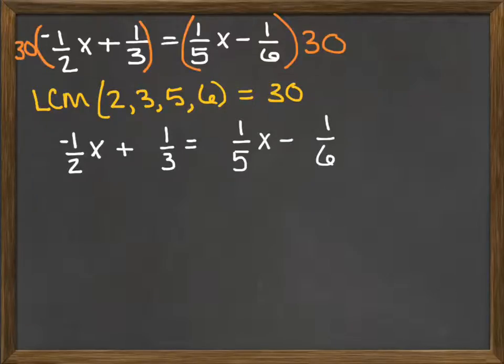I'll end up with thirty times negative one-half x, thirty times one-third, thirty times one-fifth x, and thirty times one-sixth.